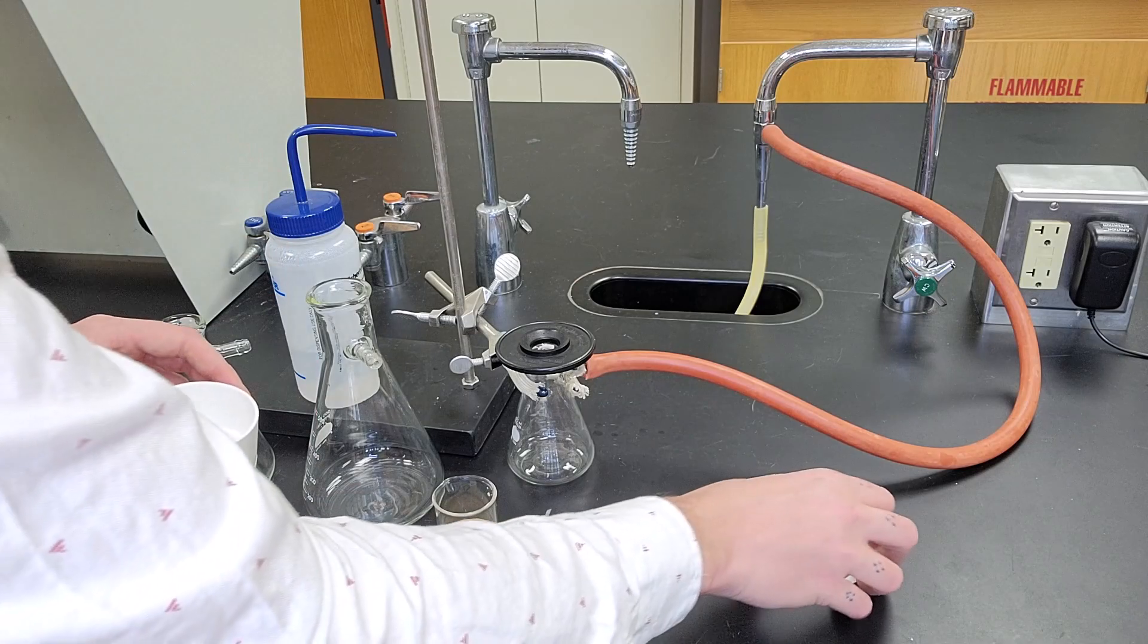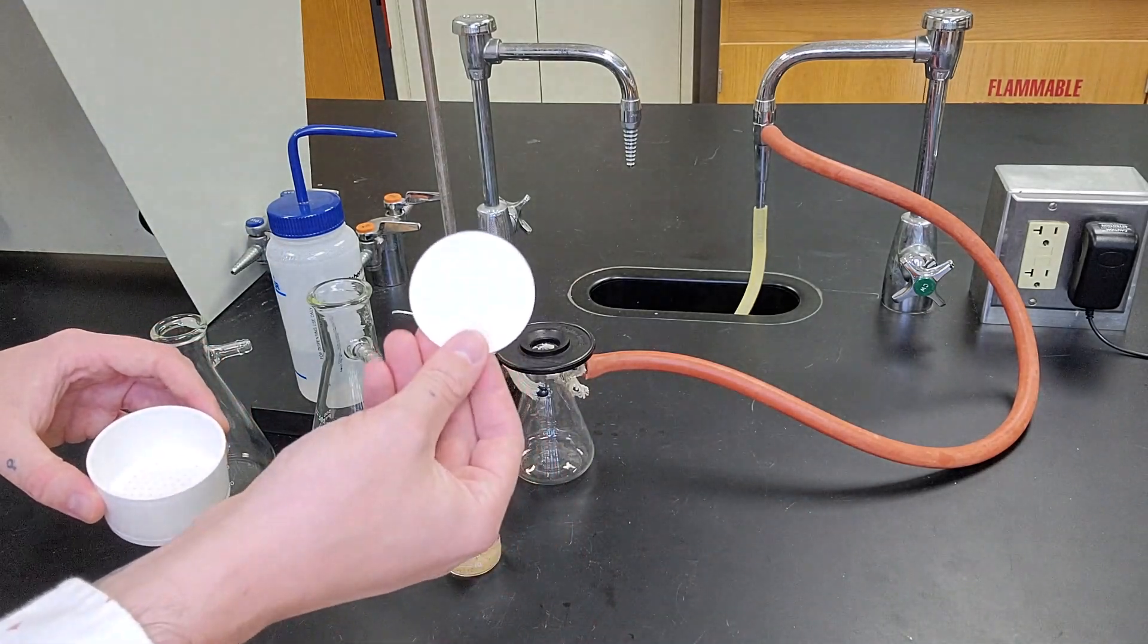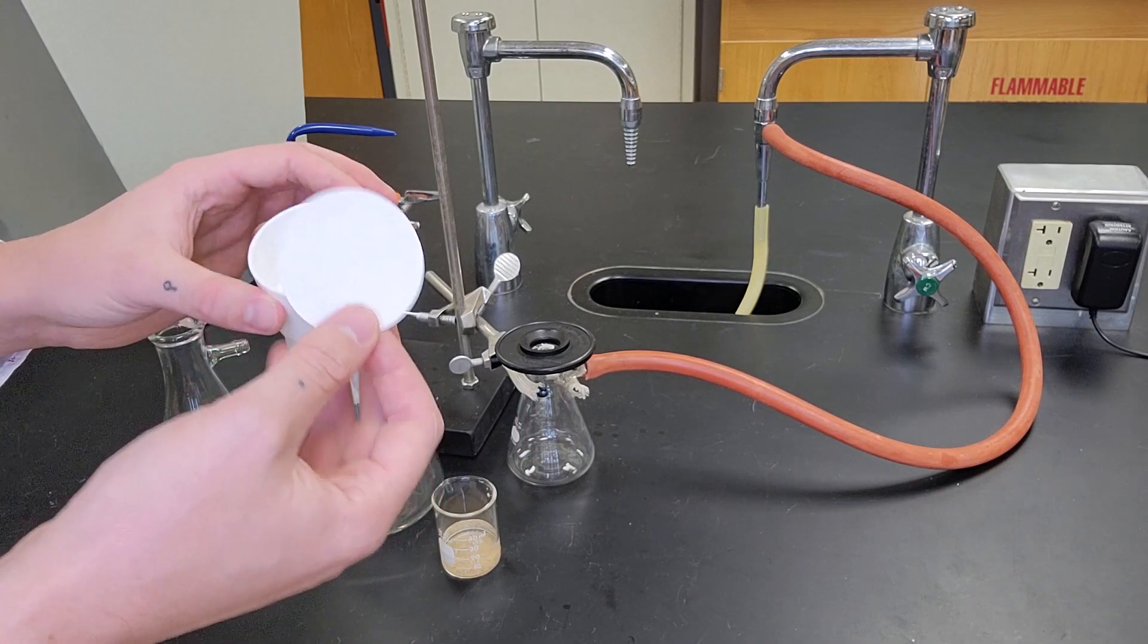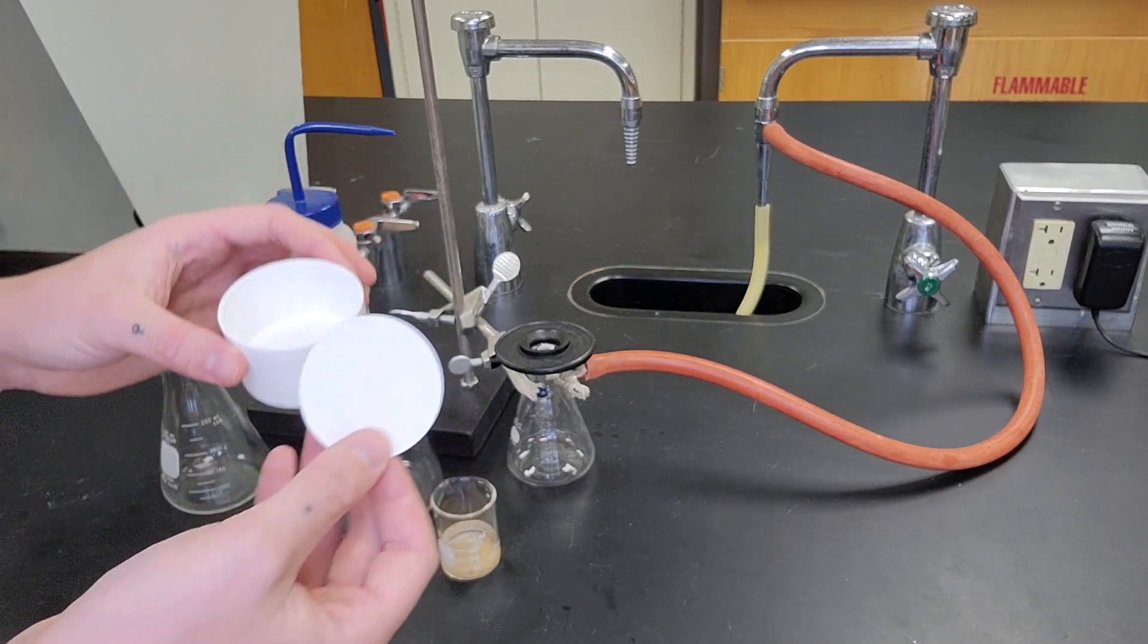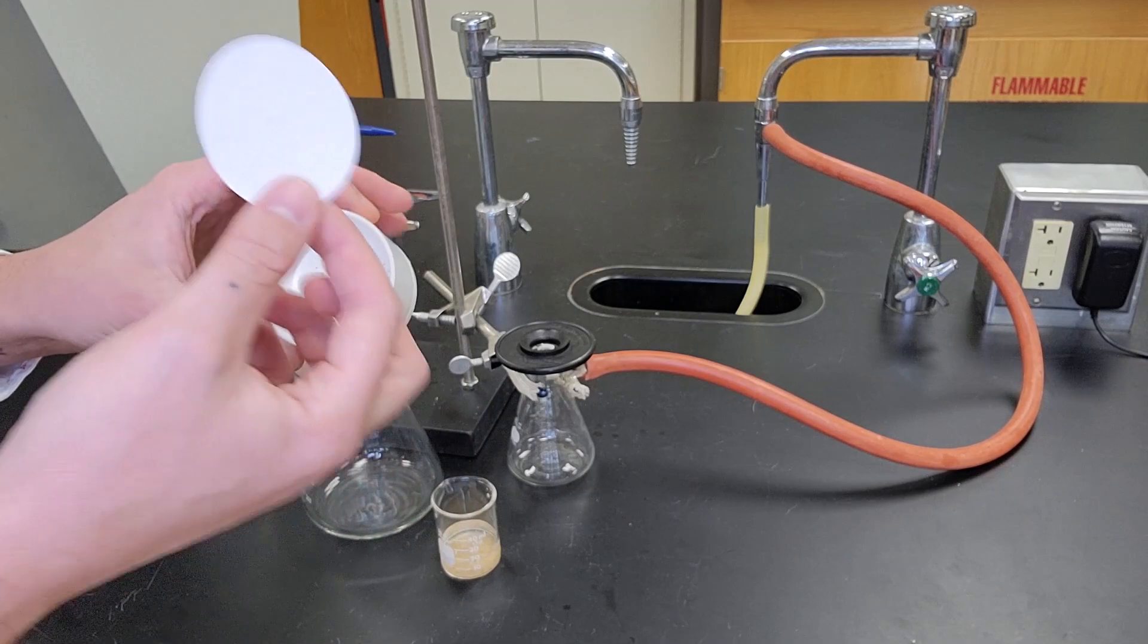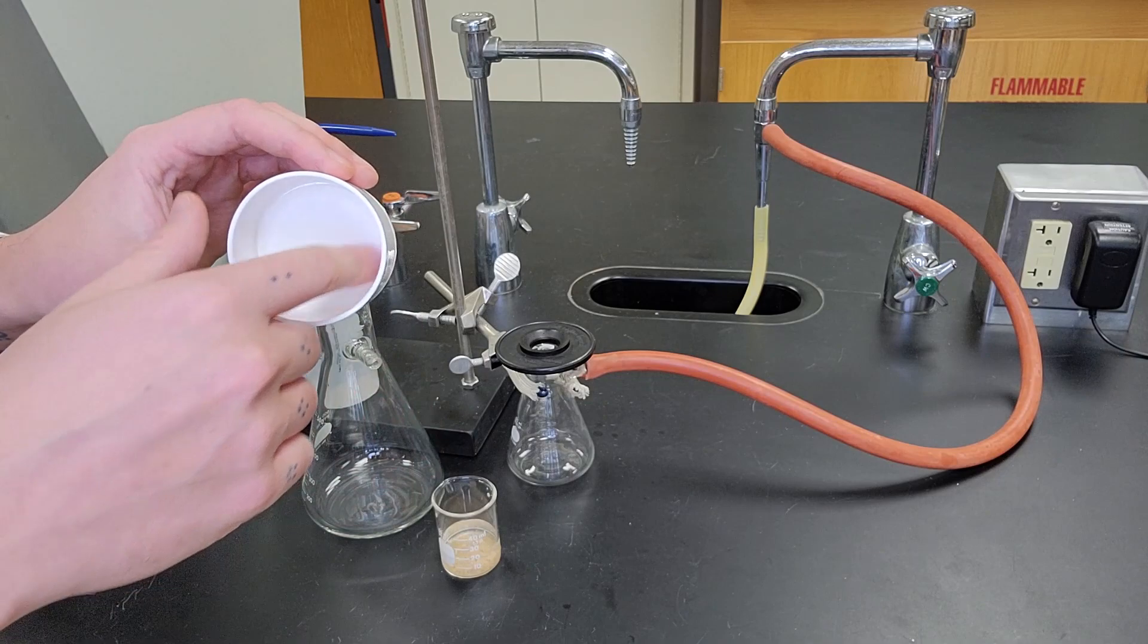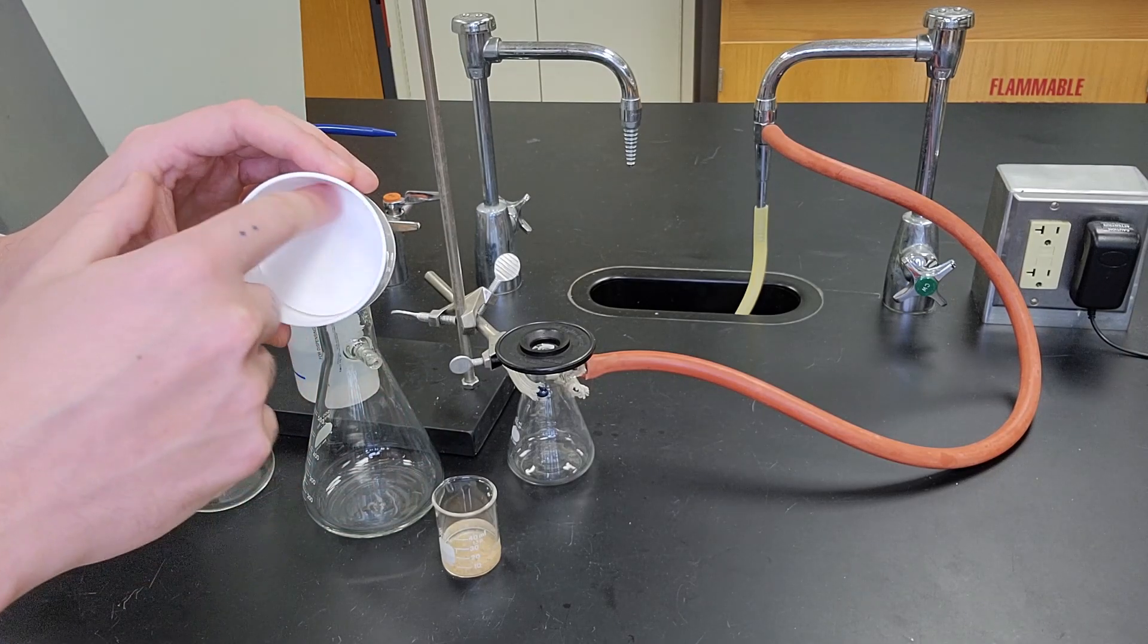Now the filter paper size is dependent on the size of the Buchner funnel. There are various sizes of Buchner funnels depending on how much solid you're trying to filter. You just want to make sure the filter paper is the correct size for your Buchner funnel so that it covers the entirety of the bottom.